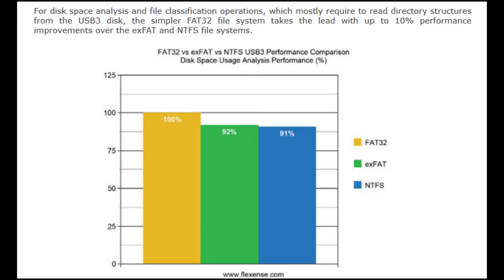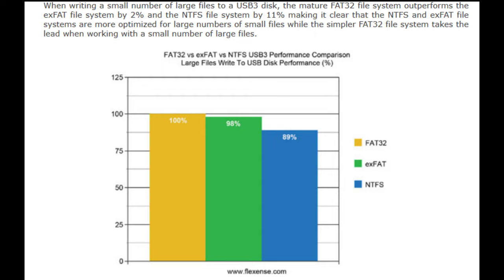2. Compatibility: FAT32 was designed to be compatible with older operating systems like Windows 95 and Windows 98, which had limitations on the size of the file system they could read. The 32GB limit ensured that FAT32 volumes could be read by these older operating systems. 3. Performance: larger volumes tend to have slower access times than smaller volumes. Limiting FAT32 volumes to 32GB helped ensure that performance remained acceptable for most users. 4. File system management: managing a large FAT32 volume can be difficult, especially when it comes to file fragmentation. By limiting the size of FAT32 volumes, Microsoft made it easier for users to manage their storage devices.